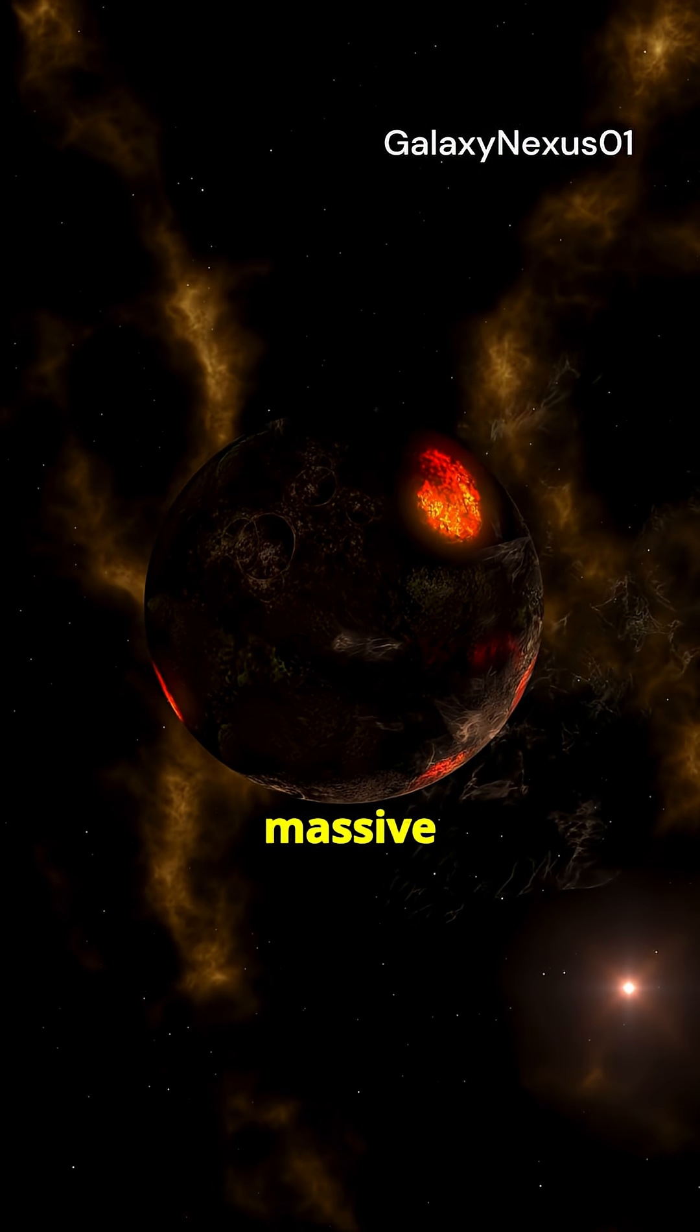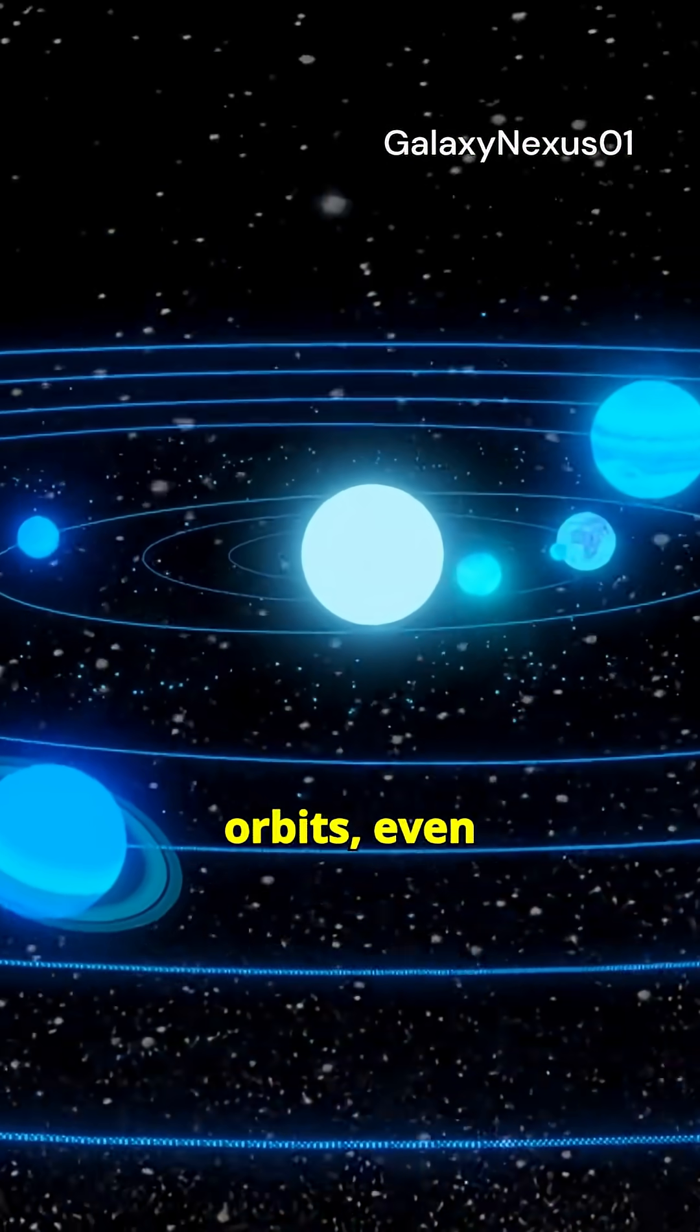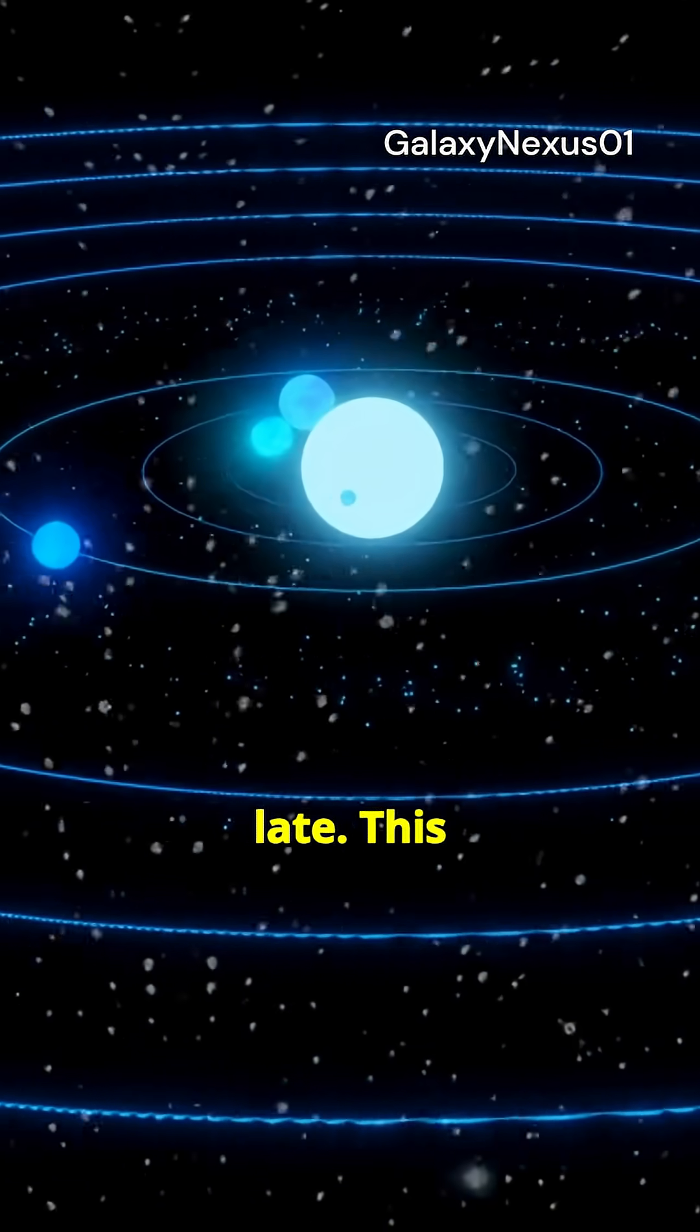If one of these massive planets ever wandered close to our solar system, its gravity could distort orbits, even tear asteroids from the belt. And we might not detect it until it's too late.